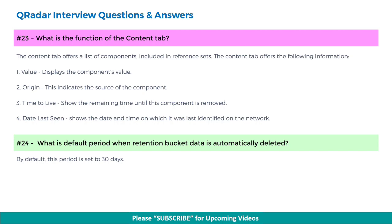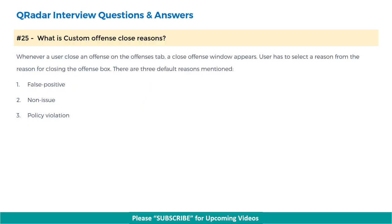Next, what is the default period when retention bucket data is automatically deleted? By default, this period is set to 30 days. Next, what is custom offense close reasons? Whenever a user closes an offense on the offenses tab, a close offense window appears. The user has to select a reason from the 'reason for closing the offense' box. There are three default reasons: false positive, non-issue, and policy violation.